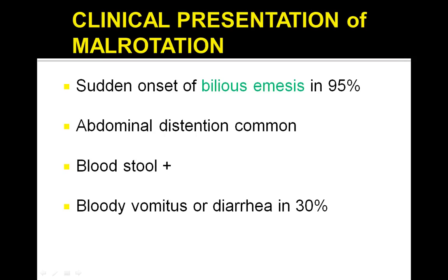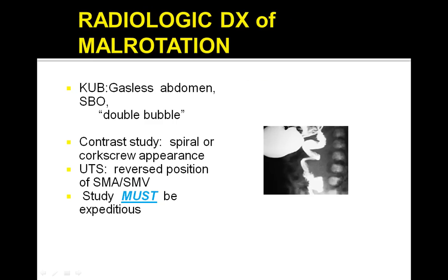Clinical presentation includes bilious emesis, abdominal distention, bloody stools, bloody vomitus, and typical changes in anatomical position. On KUB study you may see a gasless abdomen with partial or complete small bowel obstruction along with a double bubble sign. On contrast study you can see a spiral or corkscrew appearance.